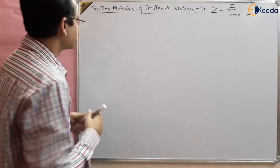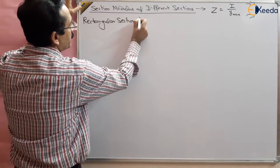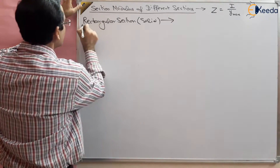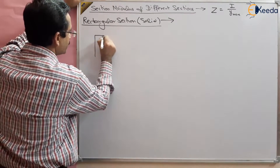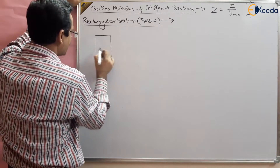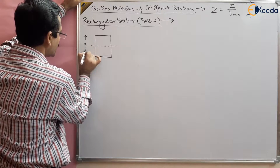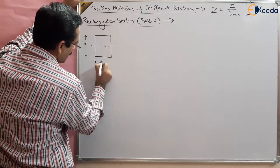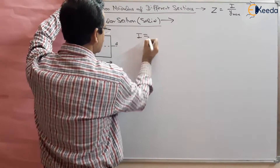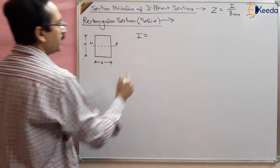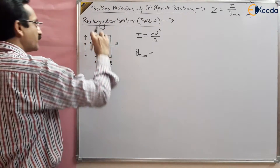Now we want to find out the section modulus of a solid rectangular section. Consider a solid rectangular section with depth D and width b. The neutral axis passes through the centroid. The moment of inertia about the neutral axis is I = bD³/12. The distance of the outer fiber y_max equals D/2.